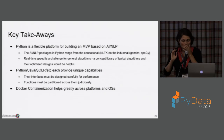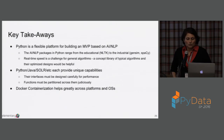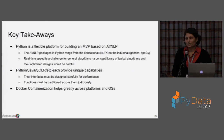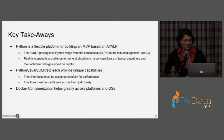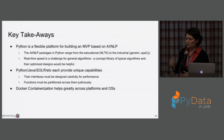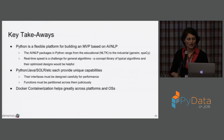Our key takeaways from our experiments with Python: the AI NLP packages range from the educational NLTK to the industrial-strength Gensim and spaCy. For general algorithms, real-time speed is a challenge and takes a lot of work to tune. It would be nice if there were a concept library of typical algorithms and their optimized designs. Stack Overflow is how we go about finding optimizations. Python, Java, and Solr each do specific things we want to leverage. For example, to speed up the similarity search we want to incorporate it into Solr, and these interfaces have to be designed carefully. Containerization really helped us speed up deployment and implementation generally.